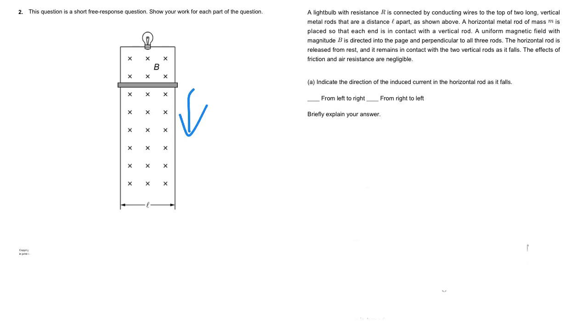So the key idea here is noticing that you have some flux, you have some area, and some magnetic field here. As this falls, the area is increasing, and if the area is going up that means the flux is going up.